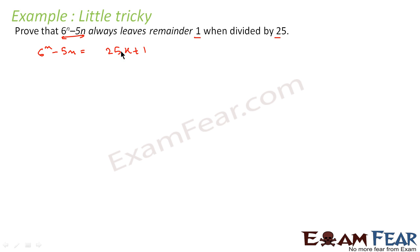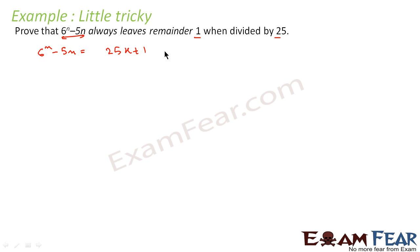That means when you multiply 25 with some number and you add 1, you get this. Or when you divide this by 25, you get k plus 1 as the quotient. So the mathematical representation is: when 6 to the power n minus 5n is divided by 25, you get 1 as remainder. We can write 6 to the power n minus 5n equals 25k plus 1.